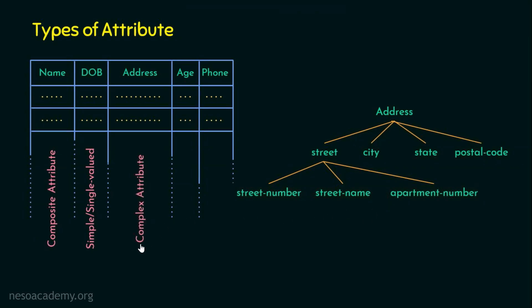Since we have a composite attribute within an attribute, this is even more complex — that is why we refer to address as a complex attribute. Consider a scenario where DBMS has a single column called address and people enter data in different ways: some use street first, some use postal code first, some use city first. This leads to chaos when generating reports. For example, querying for people residing in New Delhi becomes difficult because the city name could appear anywhere in the field. Properly handling this attribute makes search and retrieval much more effective.